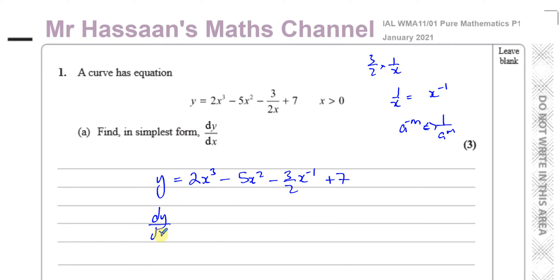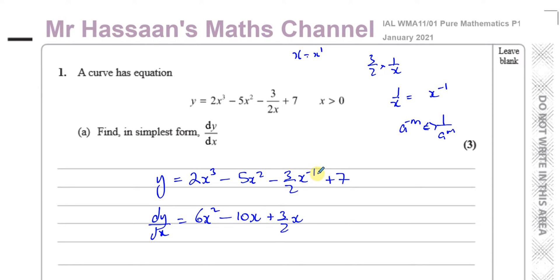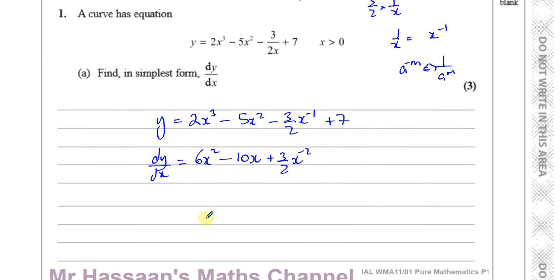When I differentiate, I multiply by the power and then take one from the power. So 2x³ gives 6x²; minus 5x² gives minus 10x (the power of one doesn't need to be written); then minus 1 times minus 3 over 2 gives plus 3 over 2, and taking one from the power gives x to the power of minus 2. The constant term, plus 7, just becomes zero — any constant drops when you differentiate.